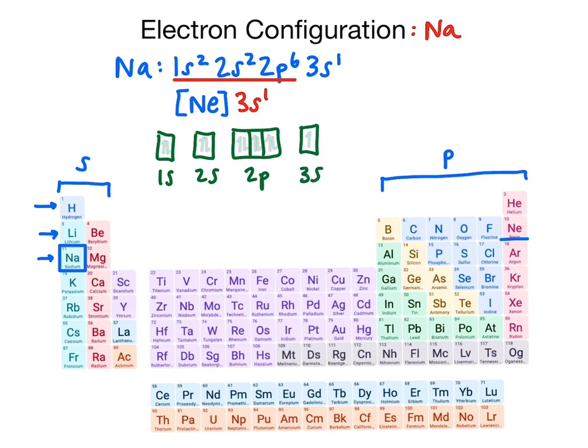So now let's draw this out. We have 1s2, 2s2. For 2p, we're going to fill each orbital separately, and then go back and pair up our electrons. And then we have 3s1.